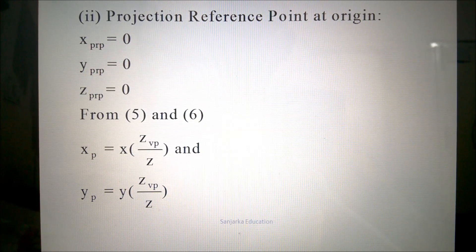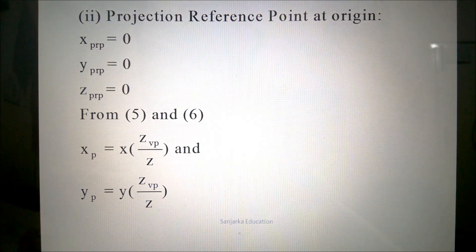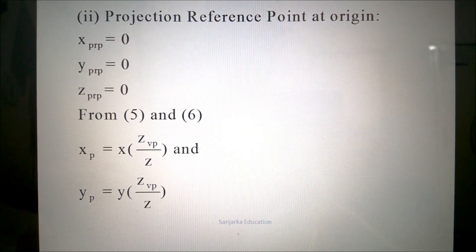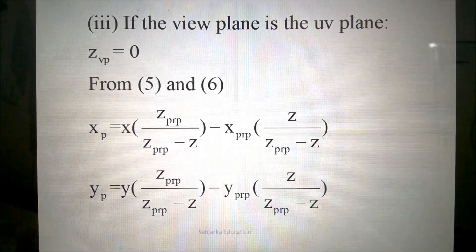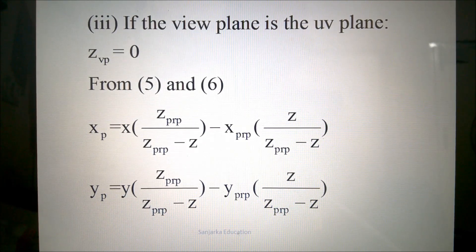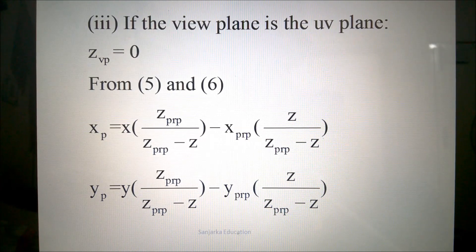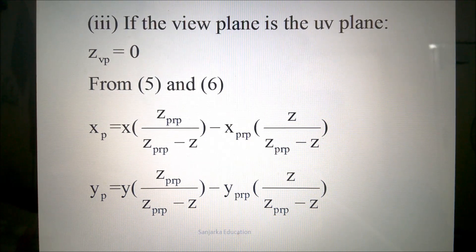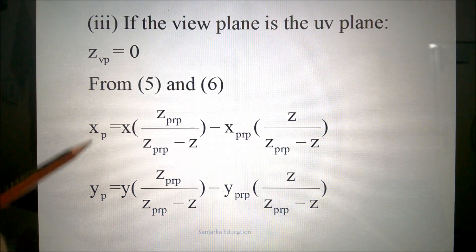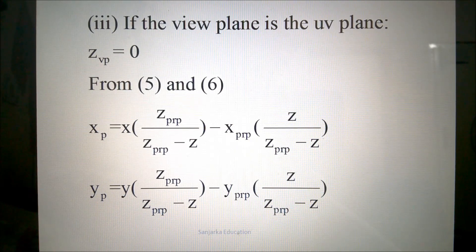Next, the projection reference point is at the origin. Since it is at the origin, all coordinates are 0. If we substitute, we get simplified equations for Xp and Yp. Then we will consider the case where the view plane is on the UV plane. The UV plane is nothing but the XY plane, and in the XY plane the Z coordinate is 0. Therefore Zvp will be 0. Substituting Zvp equal to 0 into equations 5 and 6, we get the corresponding Xp and Yp.